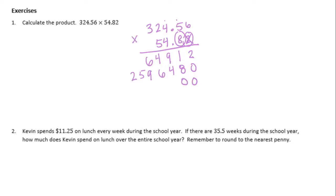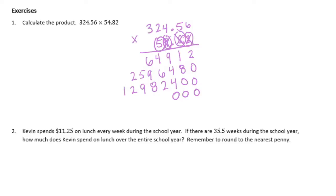Put down two zeros. On to the four: four times six is twenty-four, carry the two. Four times five is twenty, plus two is twenty-two, carry the two. Four times four is sixteen, plus two is eighteen, carry the one. Four times two is eight, plus one is nine. Four times three is twelve. Three zeros this time. Five times six is thirty, carry the three. Five times five is twenty-five, plus three is twenty-eight, carry the two. Five times four is twenty, plus two is twenty-two, carry the two. Five times two is ten, plus two is twelve, carry the one. Five times three is fifteen, plus one is sixteen.